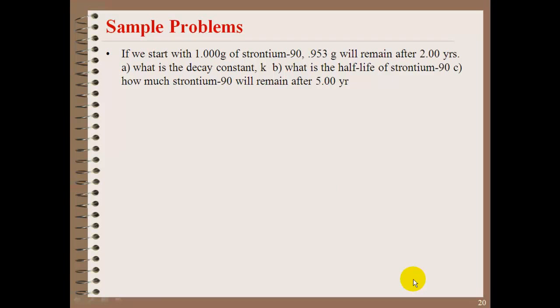Here is our equation. This should not be a surprise. This is from chapter 14. If we start with 1 gram of strontium-90, 0.953 grams will remain after 2 years. What is the decay constant? What is the half-life? And how much will be left after 5 years?